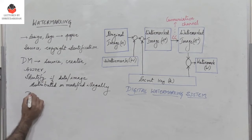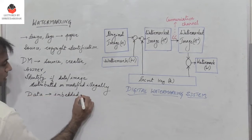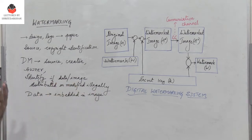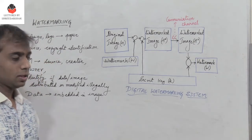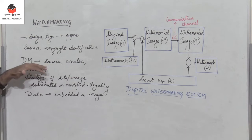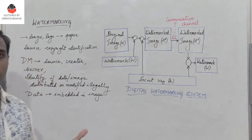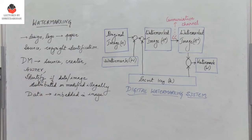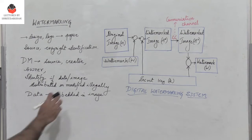Digital watermarking is a process where data is embedded in an image in a way that is imperceptible to the human eye — not visible to the observers. We do digital watermarking to identify if the data or image has been distributed or modified illegally, to identify the source, creator, or owner, and to avoid illegal distribution and modification. It also provides copyright identification.